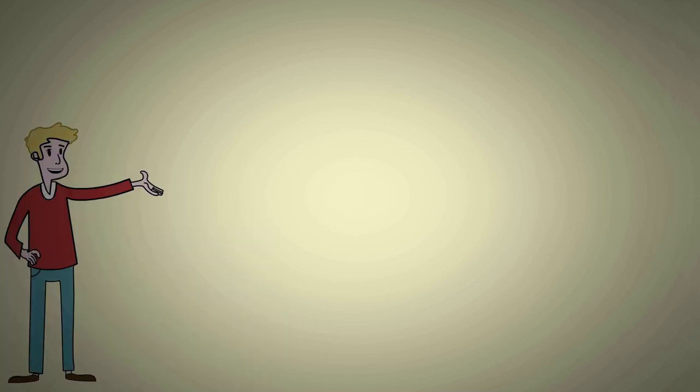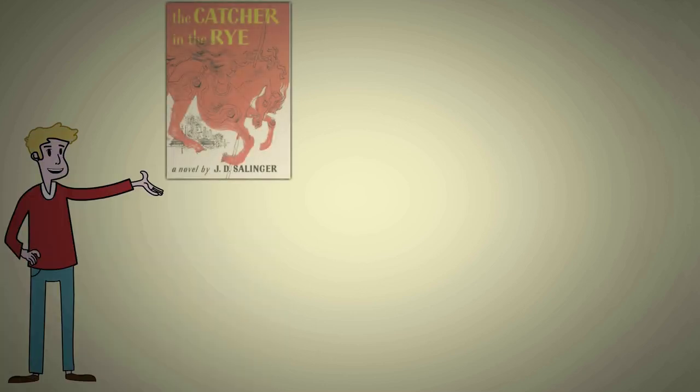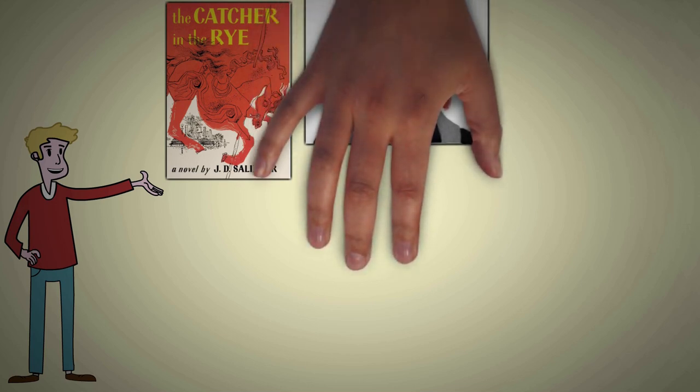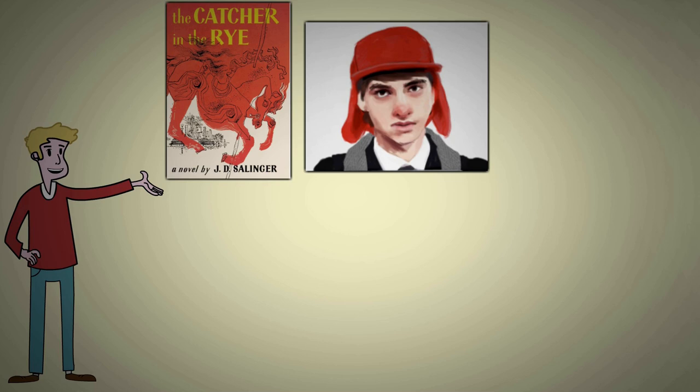An example of Sigma male can be found in the famous book and movie The Catcher in the Rye by J.D. Salinger. The protagonist, Holden Caulfield, is a perfect example of Sigma male.